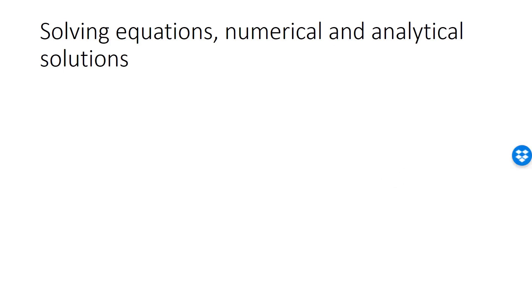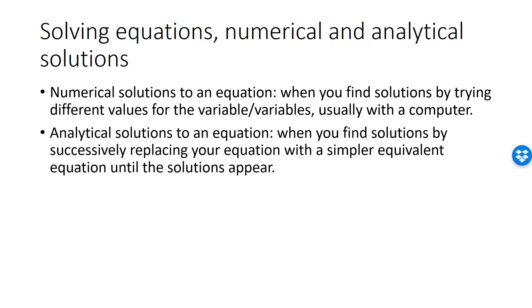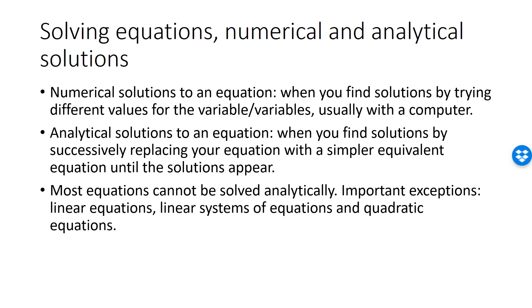In this lecture we look at methods for solving equations, restricting ourselves to the case of one equation and one variable. There are two basic strategies. We say we have a numerical solution if the solution is found by trying different values for the variable — typically done by a computer. We have an analytical solution if we keep replacing the equation with a simpler equivalent one until the solution is revealed. Only a small subset of all equations can be solved analytically.